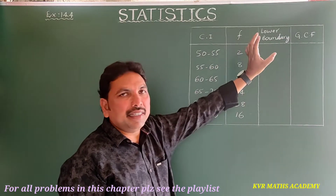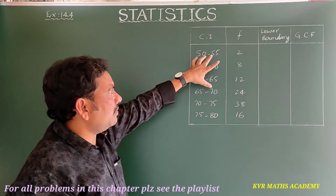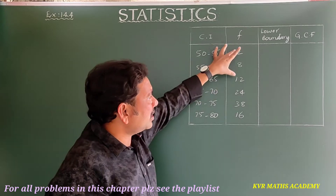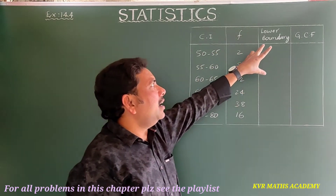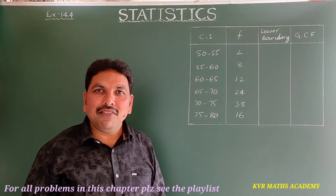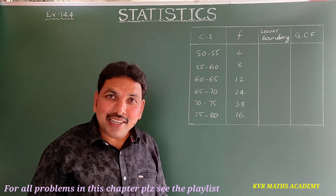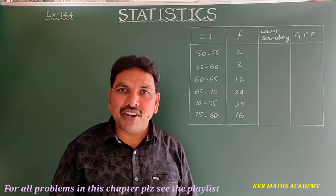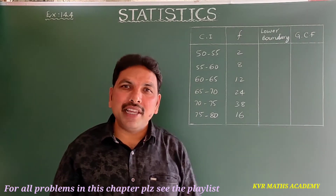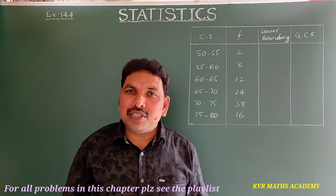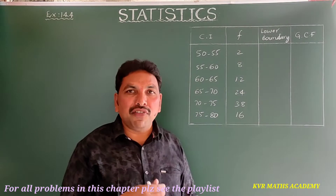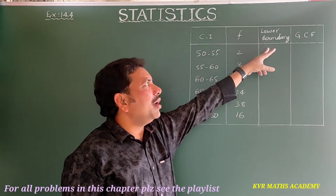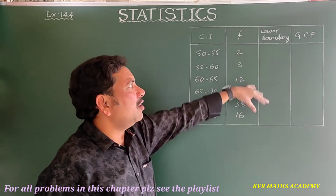From the given data I have drawn a table with columns: class intervals, frequency, lower boundary, and GCF (greater than cumulative frequency). I have taken the same class intervals and frequencies as in the problem. I have taken lower boundary and GCF because the problem clearly states to draw a more than type cumulative frequency curve. The curve drawn from lower boundary and GCF points is called the greater than cumulative frequency curve.